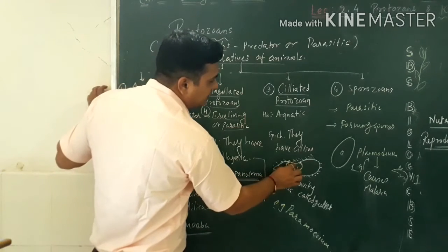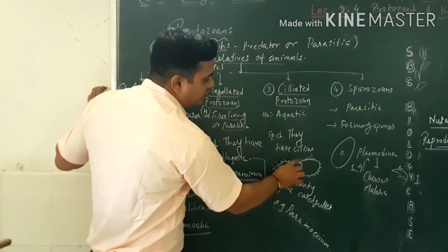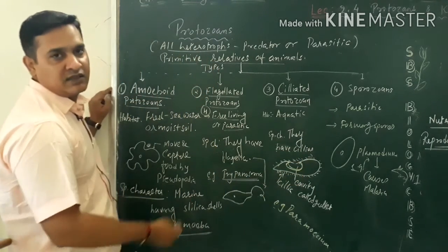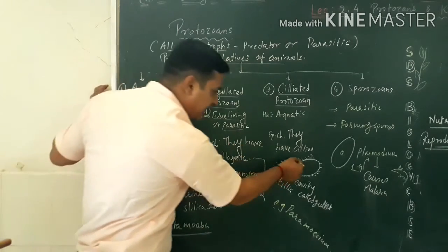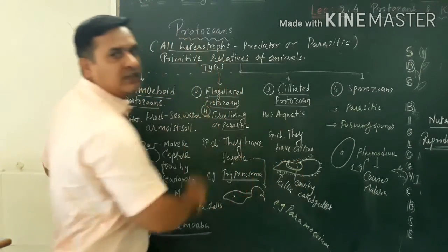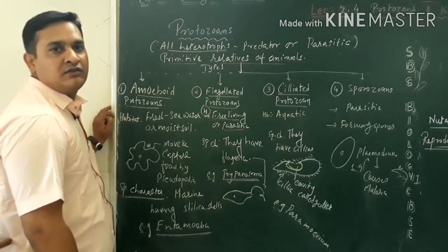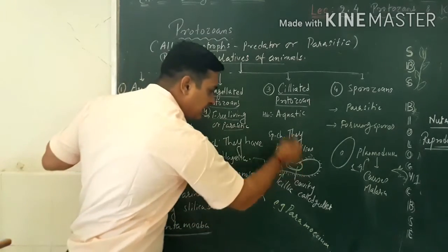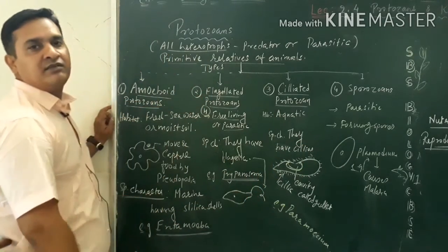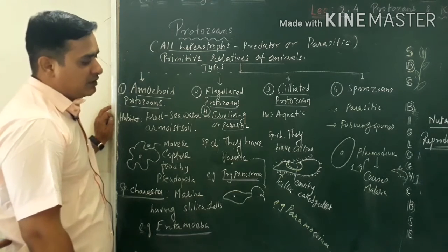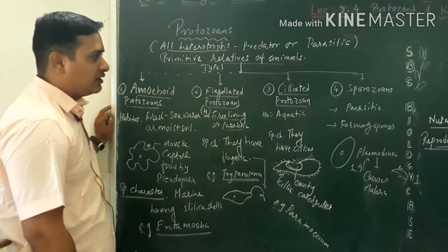In ciliated protozoans, the gullet opens outside. And from that way, the food can be entered by the gullet. Food enters through the gullet. Main example is Paramecium.